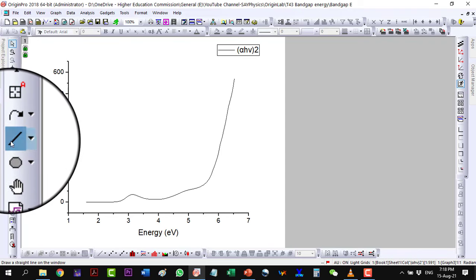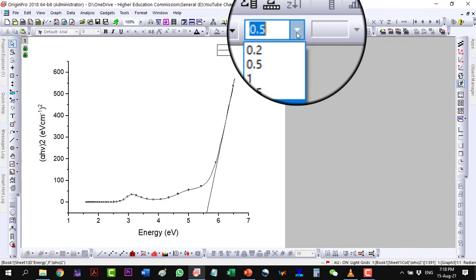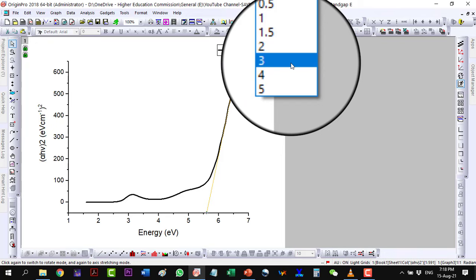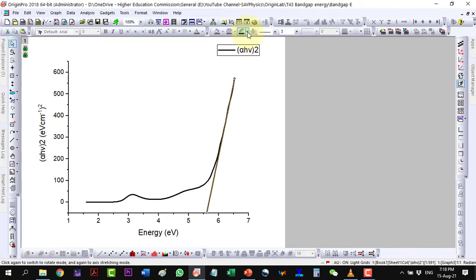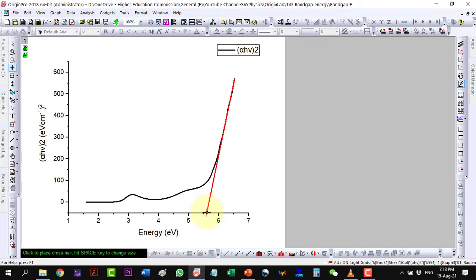With the line tool, draw a straight line on the X axis. Now, with the screen reader, we can find the X intercept value.